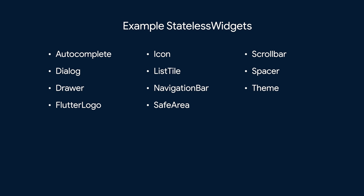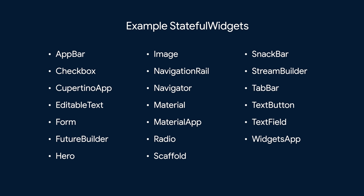To illustrate this, here is a list of example stateless widgets from the Flutter framework. Notice how many are high-level concepts like autocomplete, drawer, list tile, and navigation bar. And here is a list of some example stateful widgets from the Flutter framework. Similarly, many are high-level design system concepts like app bar, navigation rail, scaffold, and text button.